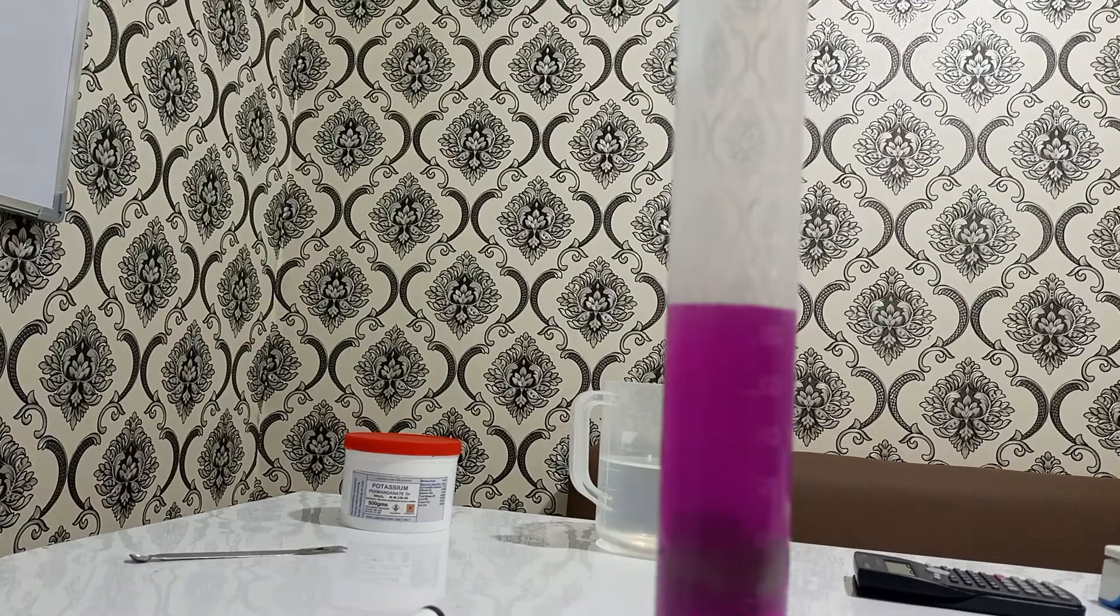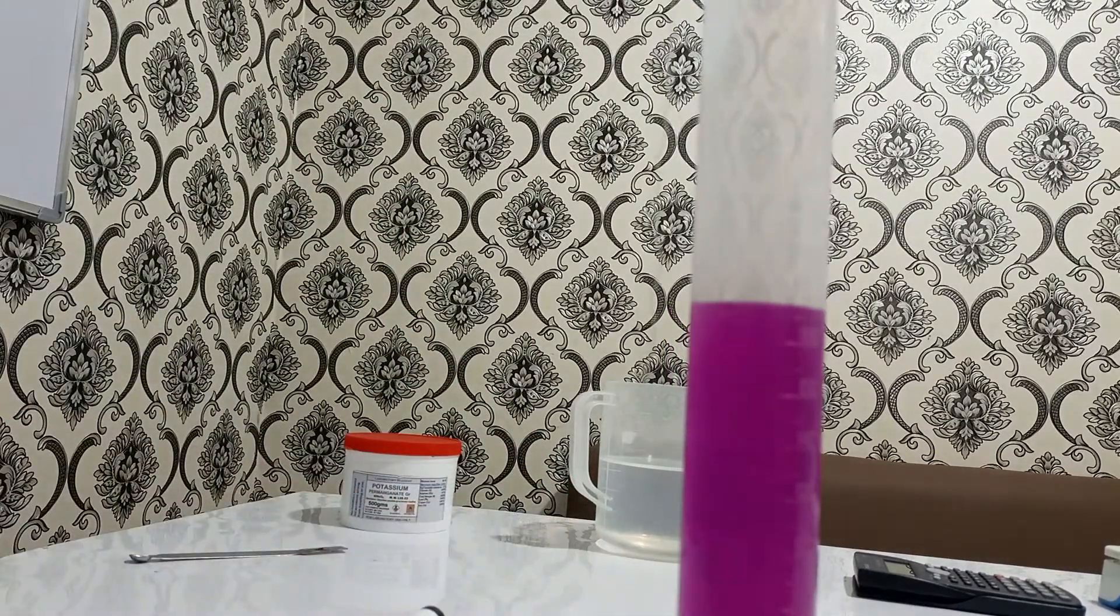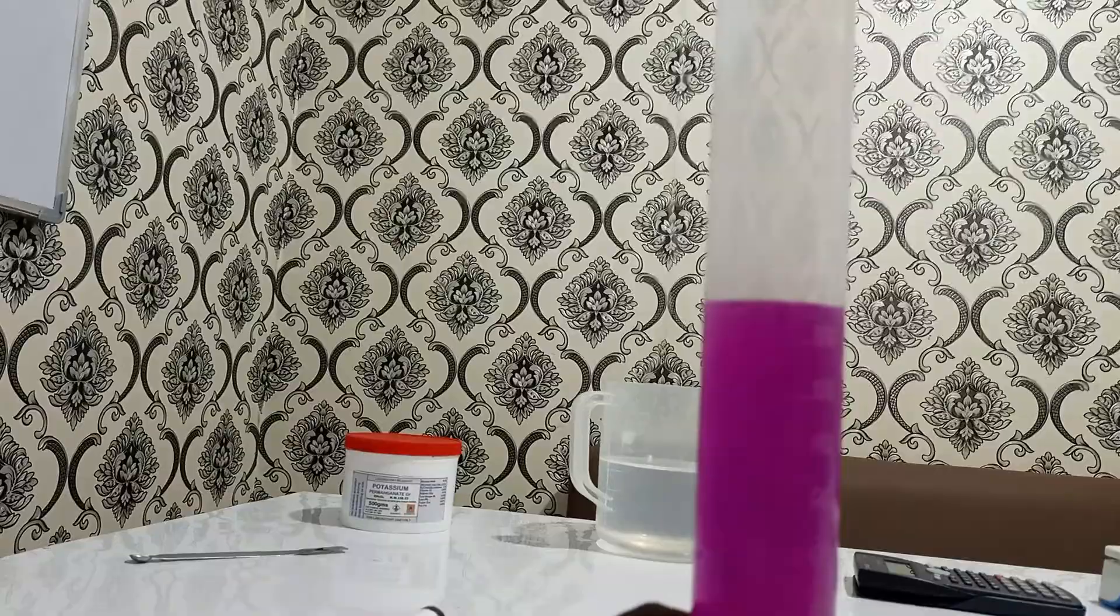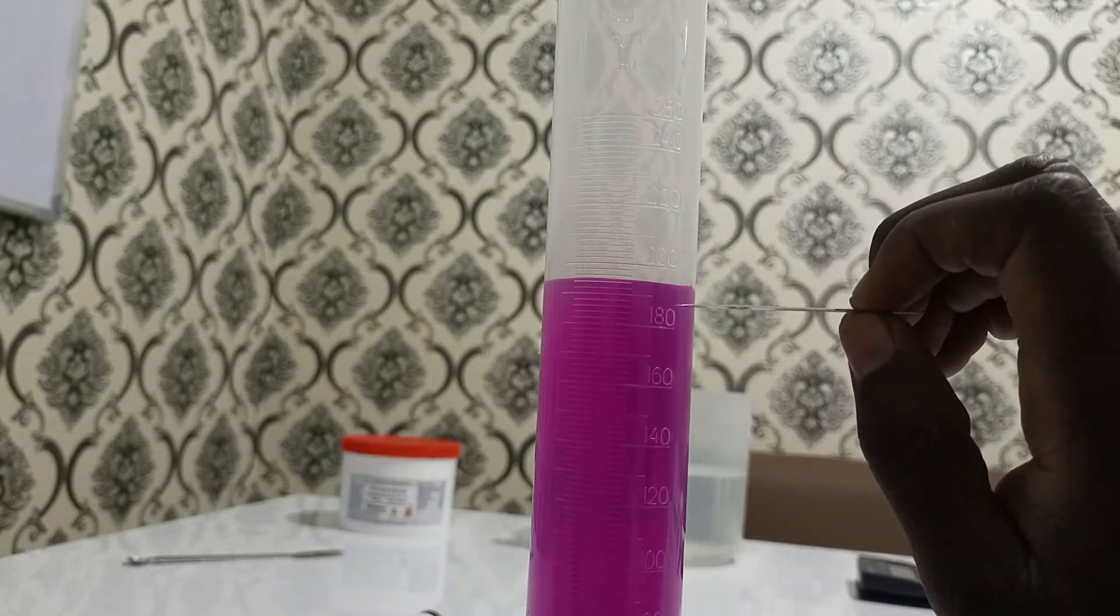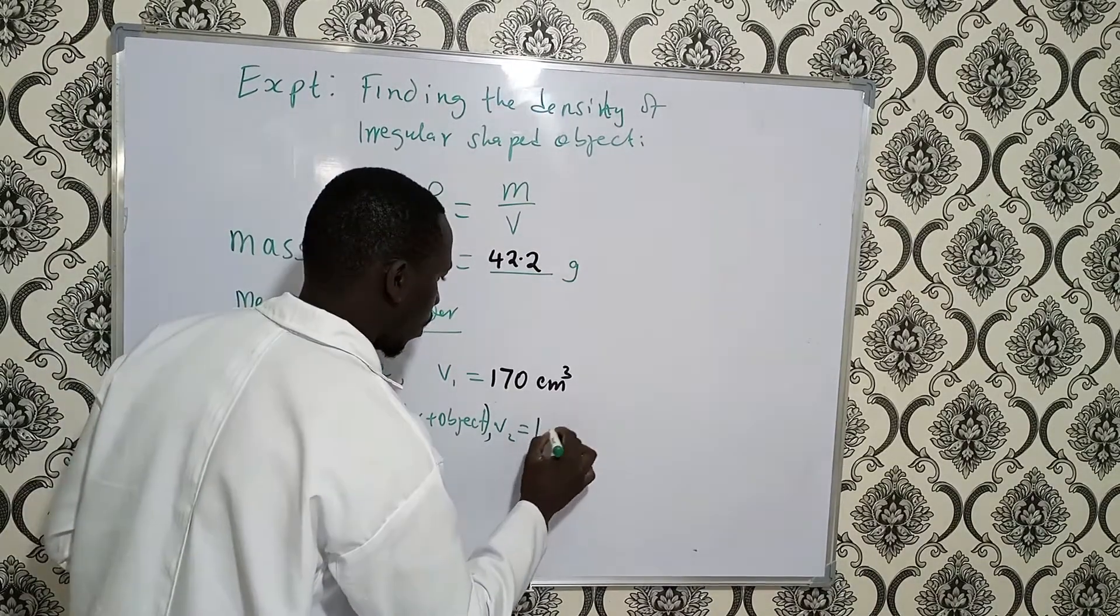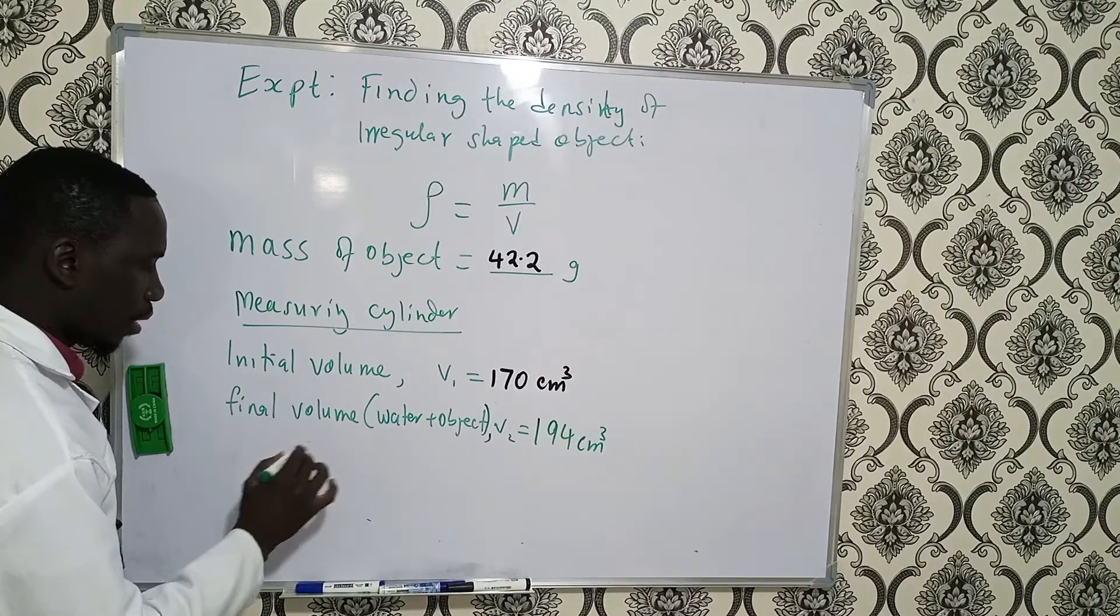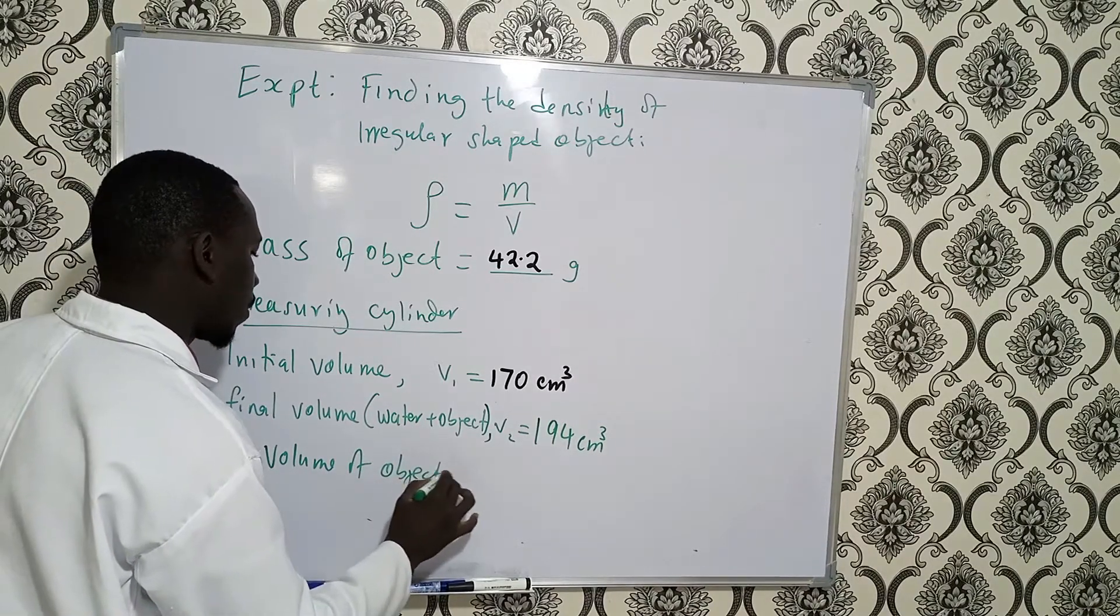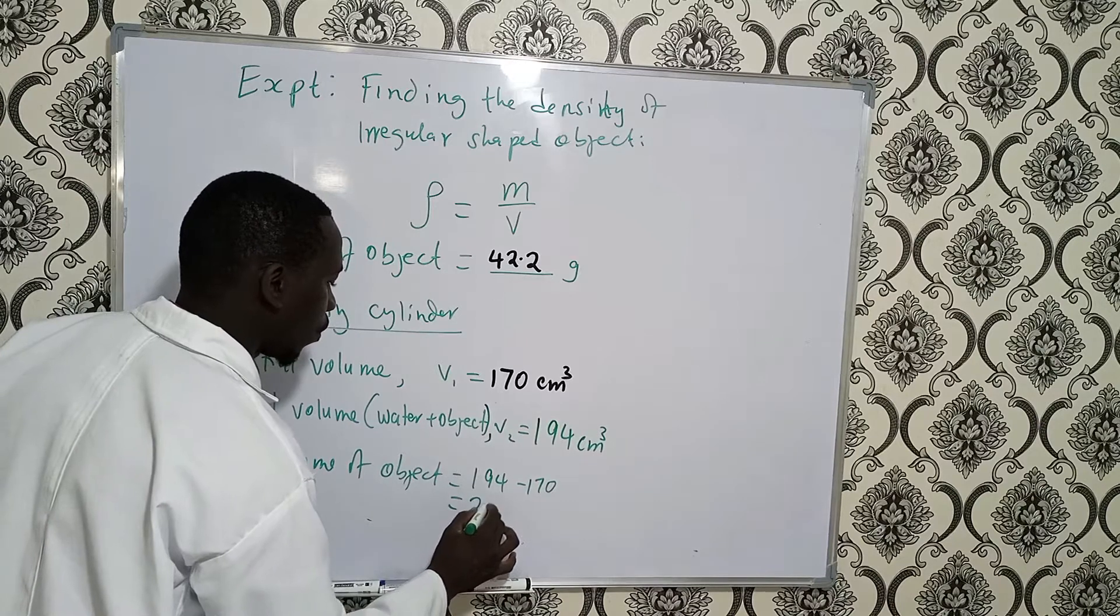Carefully lower the solid. I want to be able to see there is a rise in volume. So, this is 190 to 194, so the reading is 194 cubic centimeter. Now the volume of this solid, this object, its volume is 194 minus 170 and this is equal to 24 cubic centimeter.